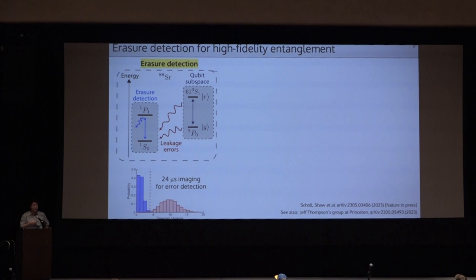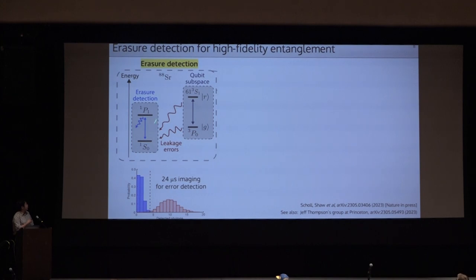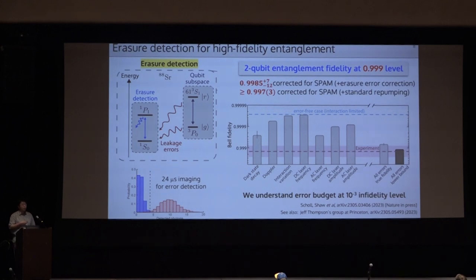Recently, we revisited the two-qubit entanglement problem because of an interesting idea called erasure detection. We work with an effective two-level manifold of excited and ground states. If an undesired error such as spontaneous decay happens, the population goes to the absolute ground state, which can be detected by additional imaging light. When fluorescence is seen, we can herald this error and post-select the measurement data. Using this technique, we improved the Bell state generation fidelity from two nines to three nines. More importantly, we believe we understand the remaining infidelities at the 10^-3 level, and see room for further improvements.